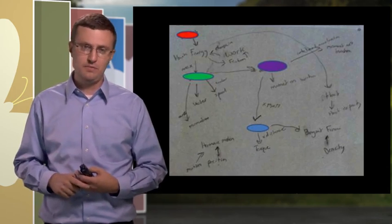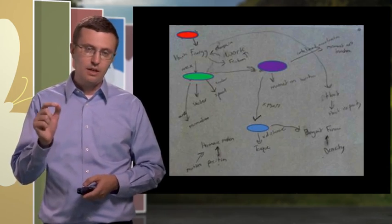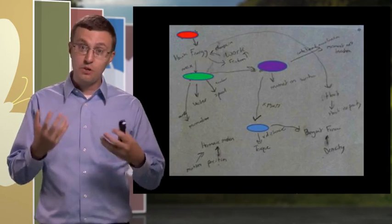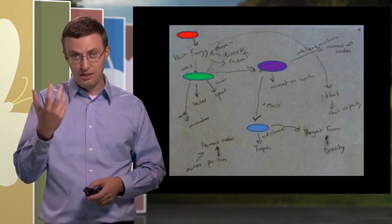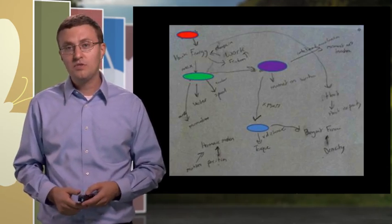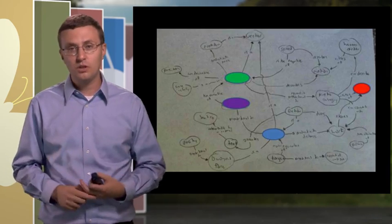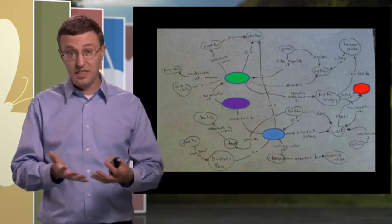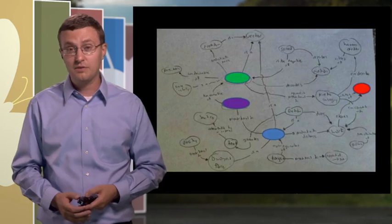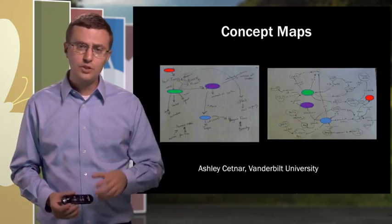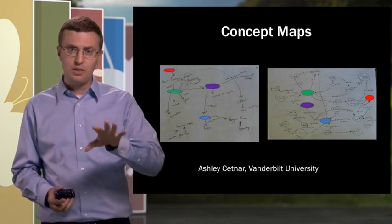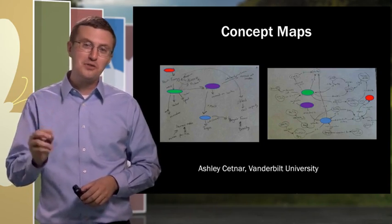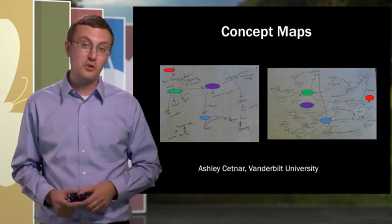For each of the student-created concept maps, she calculated the average number of connections to and from those four key concepts — a metric representing how many connections there were to these primary, most important concepts. As you can see from these examples, some students had more connections, some had fewer. When she looked at this metric and compared it with the students' test scores in the course, there was a pretty strong correlation between the two.